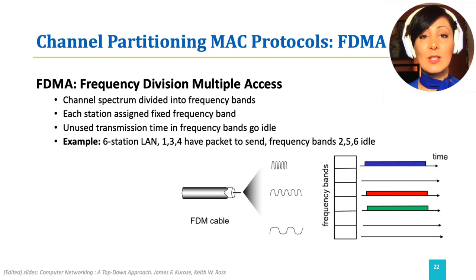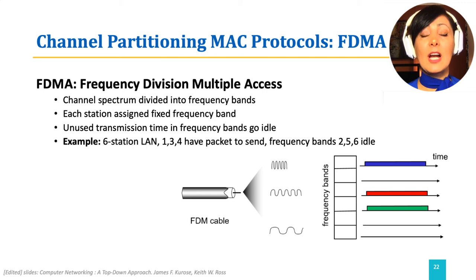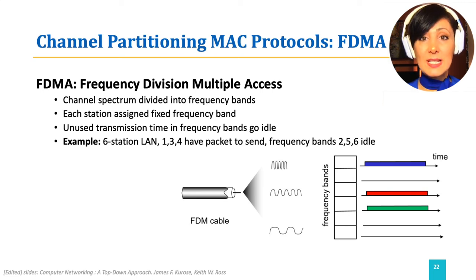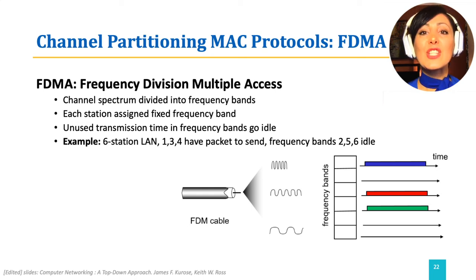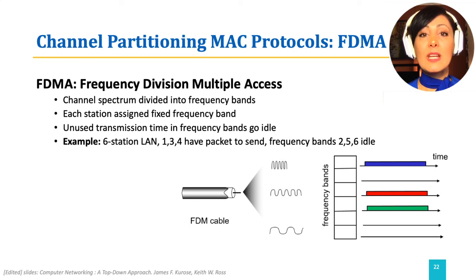As you can see, FDMA is also like TDMA, in that the unused assigned portions — which in FDMA are frequency bands — go idle. It also does not assign the unused frequency band to another user that has more packets to send.